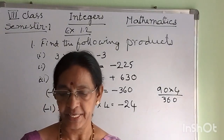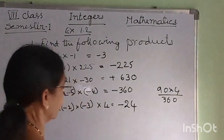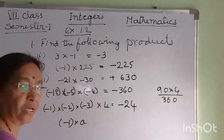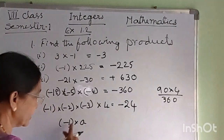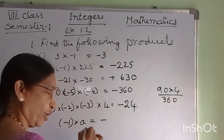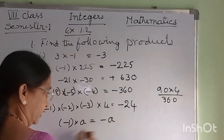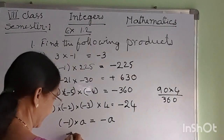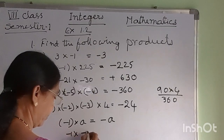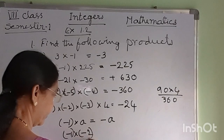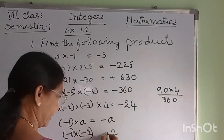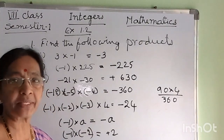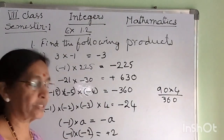For any integer a, what is minus 1 into a? When an integer is multiplied by minus 1, it gets the opposite sign. So minus 1 into a equals minus a. If a is a negative integer, for example minus 2, then multiplying by minus 1 gives plus 2 — the opposite sign. Therefore, when any integer is multiplied by minus 1, we get the same integer with the opposite sign.